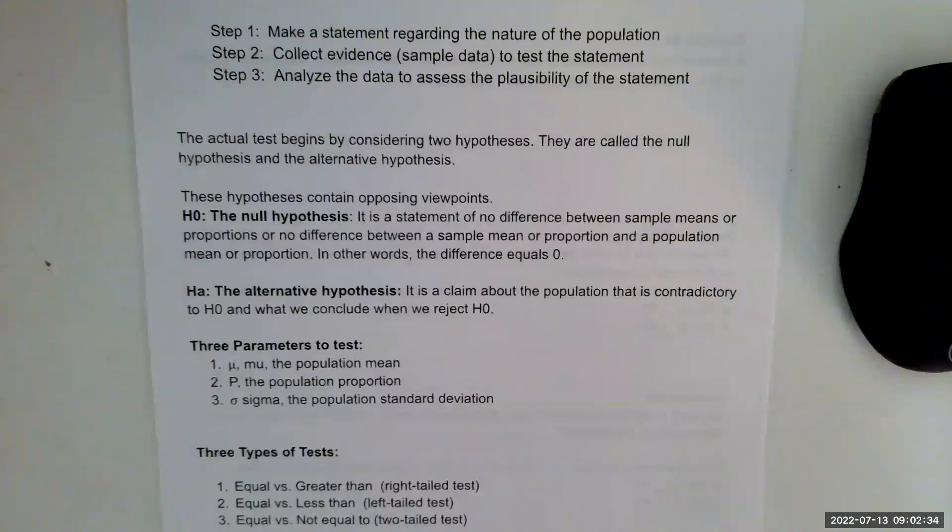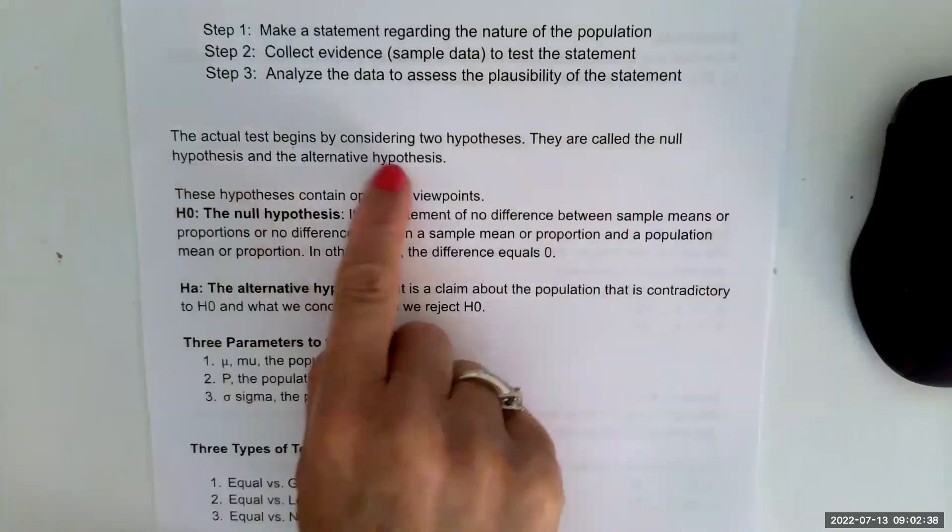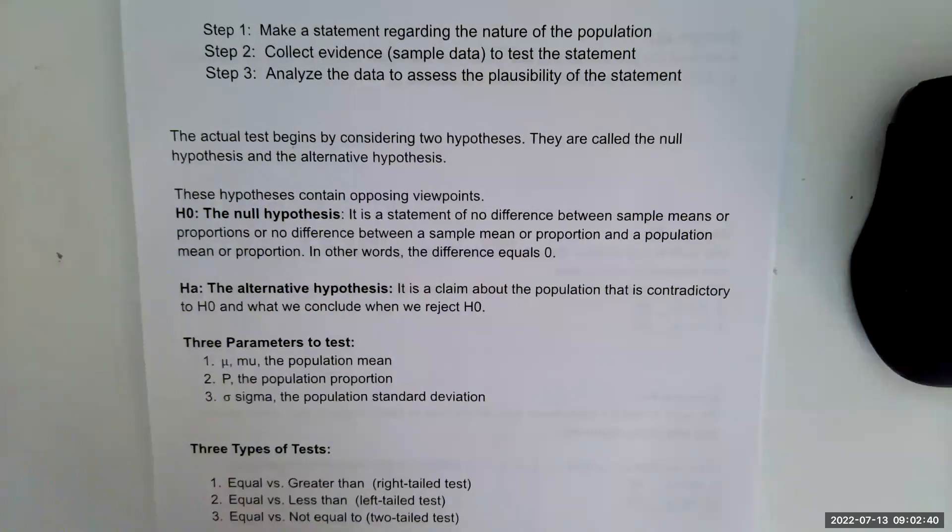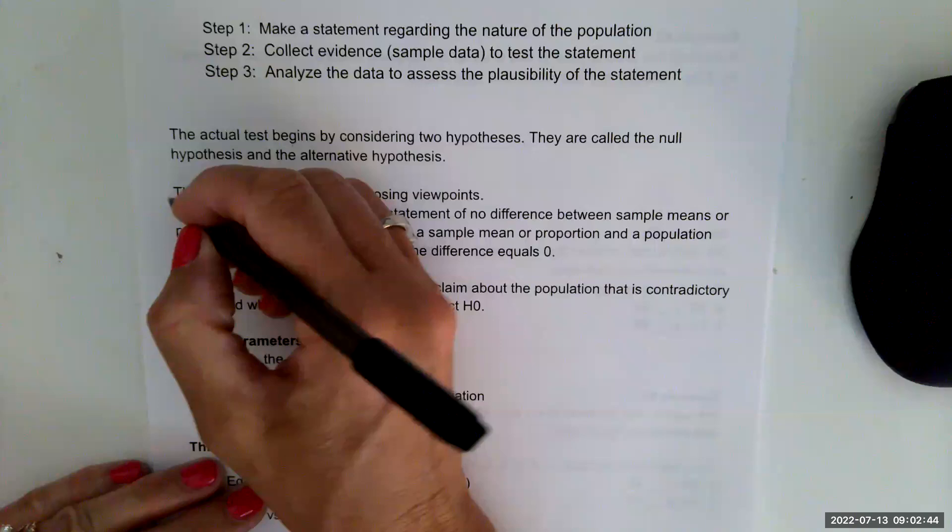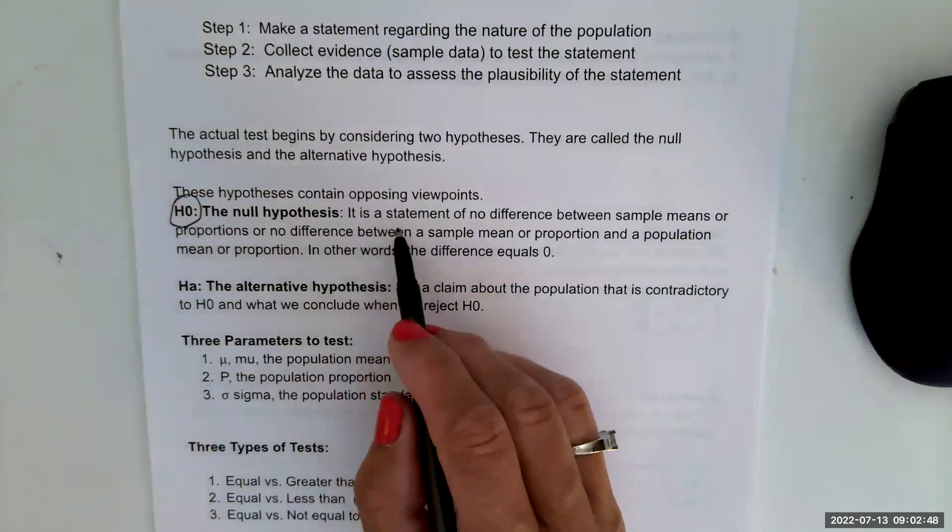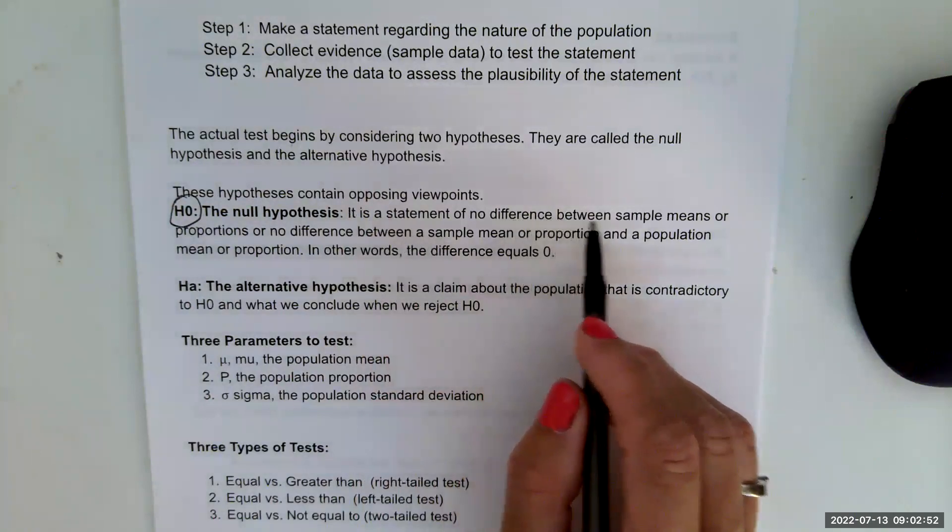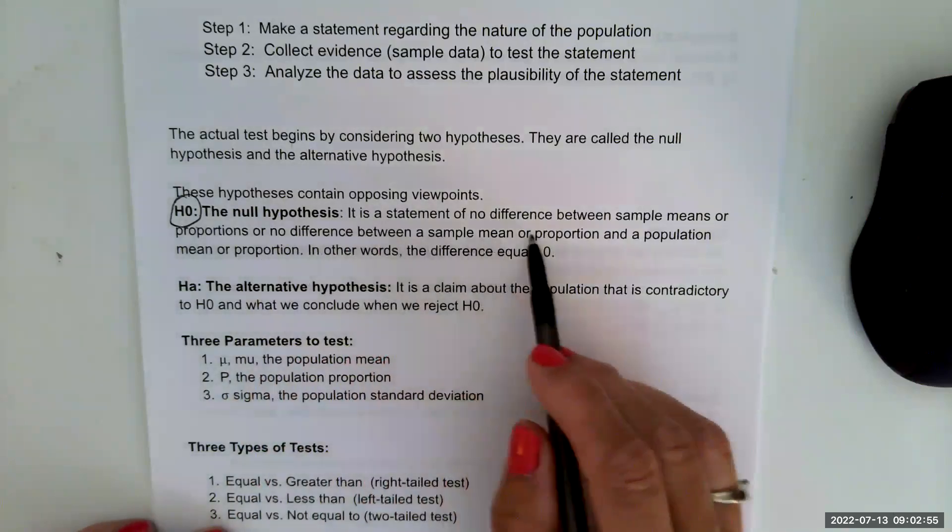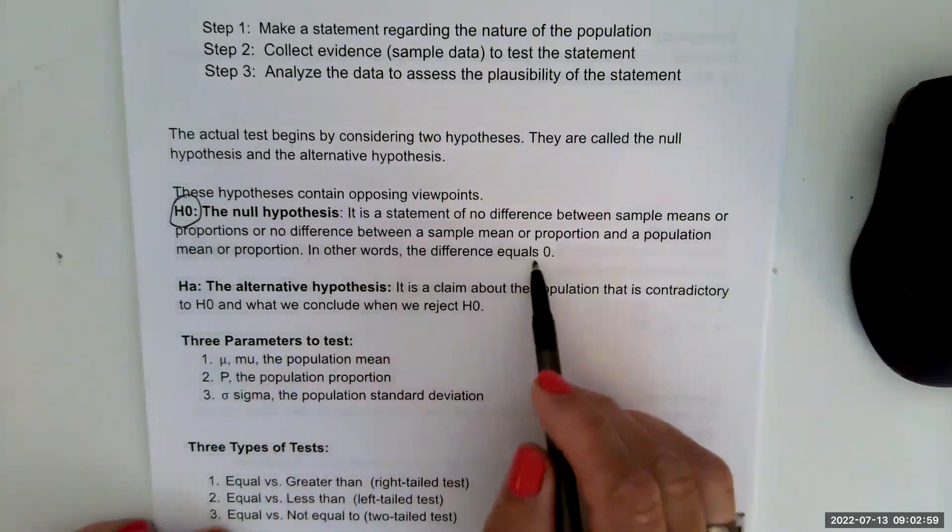The actual test begins by considering two hypotheses. They are called the null hypothesis and the alternative hypothesis. The null hypothesis, we're going to use this symbol H0. It is a statement of no difference between sample means or proportions or no difference between a sample mean or proportion and a population mean or proportion. In other words, the difference equals zero.